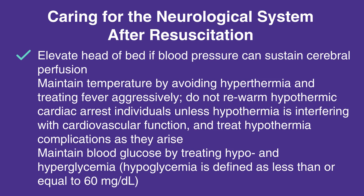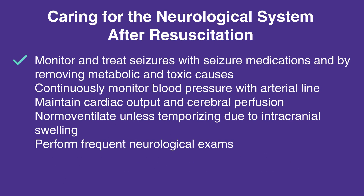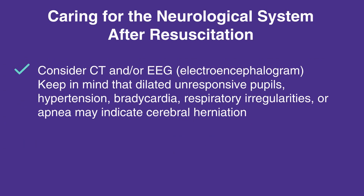When caring for the neurological system after resuscitation, follow this checklist: elevate the head of bed if blood pressure can sustain cerebral perfusion; maintain temperature by avoiding hypothermia and treating fever aggressively; do not re-warm hypothermic cardiac arrest individuals unless hypothermia is interfering with cardiovascular function; treat hypothermia complications as they arise; maintain blood glucose by treating hypo- and hyperglycemia — hypoglycemia is defined as less than or equal to 60 mg per deciliter; monitor and treat seizures with seizure medications and by removing metabolic and toxic causes; continuously monitor blood pressure with arterial line; maintain cardiac output and cerebral perfusion; normal ventilate unless temporizing due to intracranial swelling.